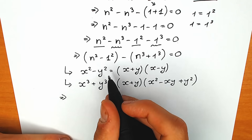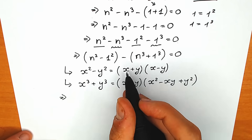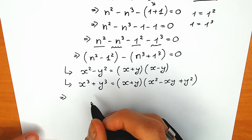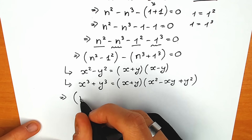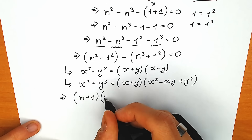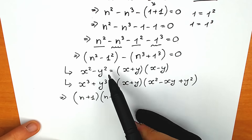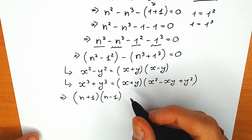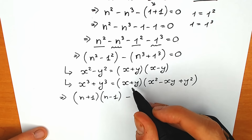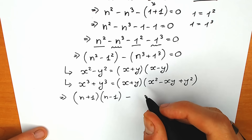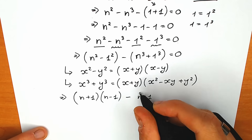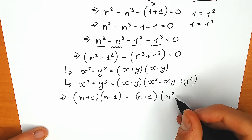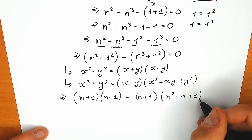First of all, applying the difference of squares: n plus 1 times n minus 1. And for the sum of cubes, we have minus — in the first parenthesis n plus 1, and in the second parenthesis n-squared minus n plus 1 — equal to zero. So from here we have n minus 1, and this second factor: minus, n-squared minus n plus 1.